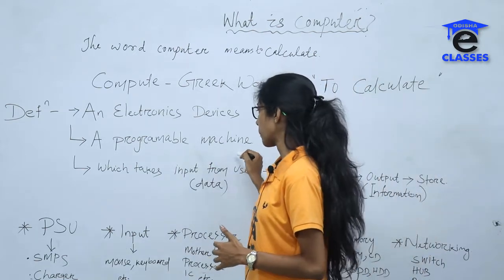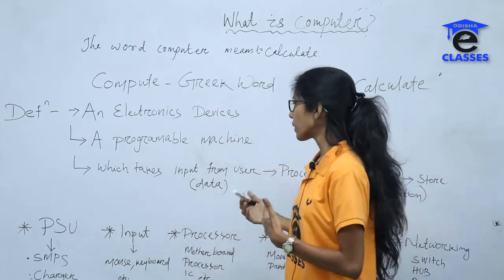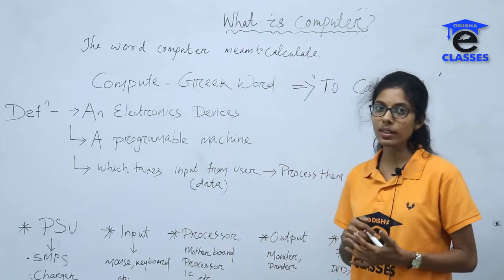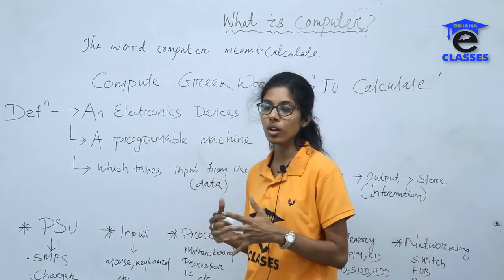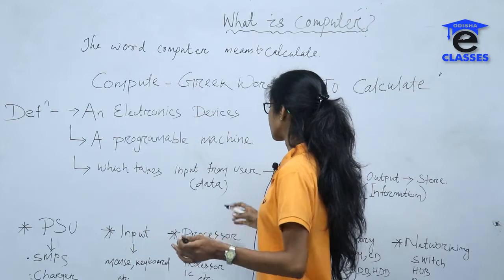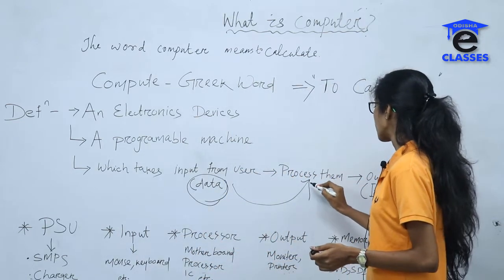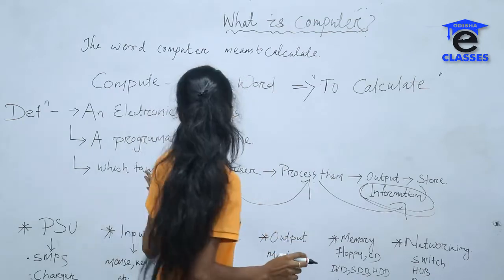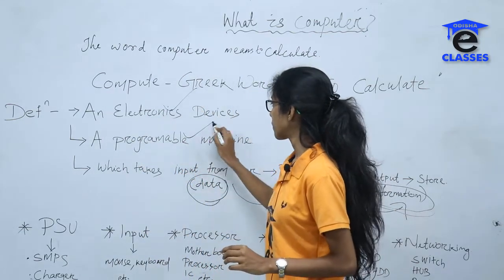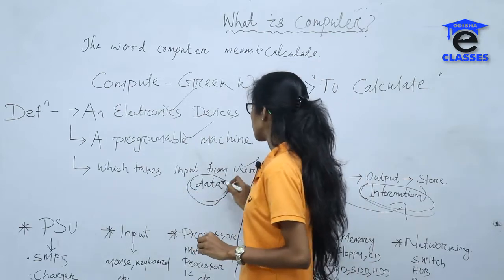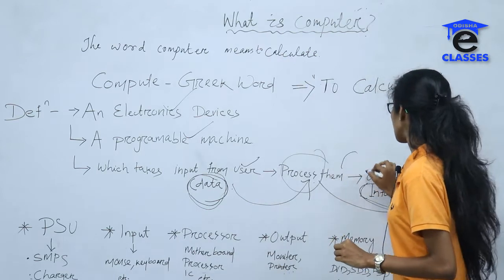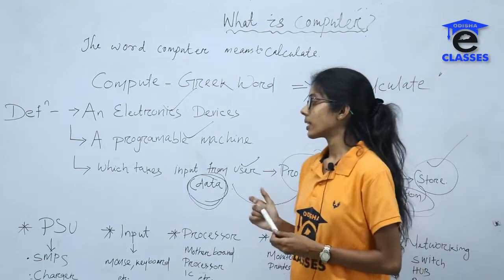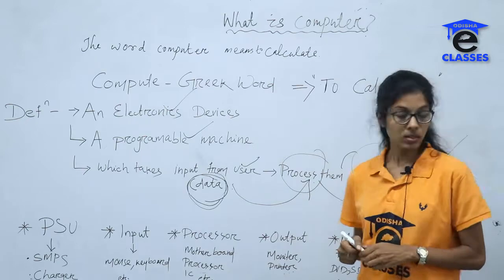A computer is also a programmable machine. It takes input from the user in data format, which is unorganized. The computer processes that unorganized data and converts it into organized information. So, a computer is an electronic device, it is a programmable machine, it takes input from the user, processes it, and we can also store it for future use.